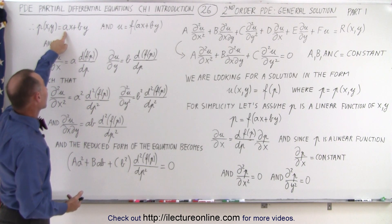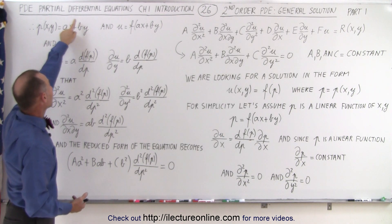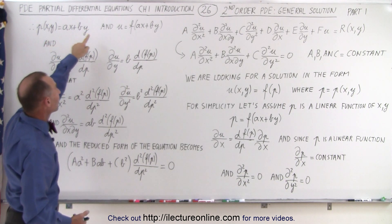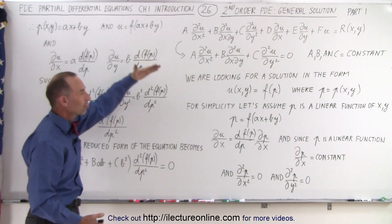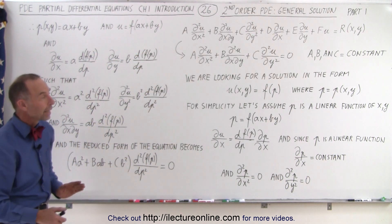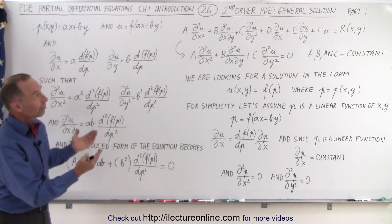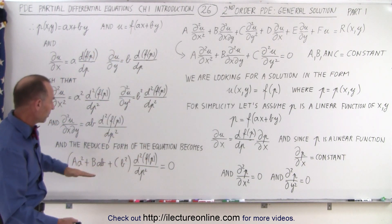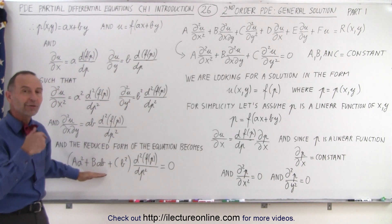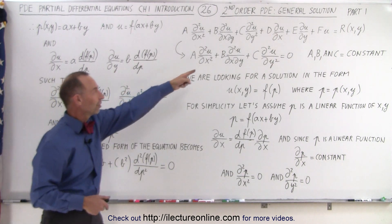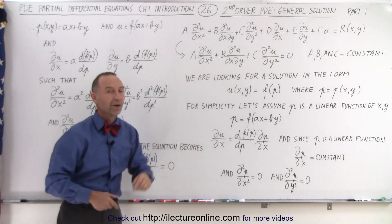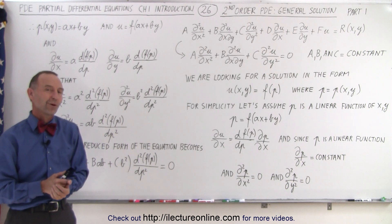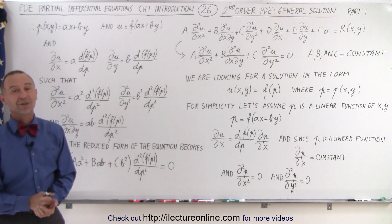In other words, we're going to find the values for a and b, and that will then give us a solution for p, which then gives us a solution for u. That's the general approach that we're taking. And since I'm running out of board space, there will be a part two where we'll finish this job and actually give you a general form of the solution of this second-order partial differential equation. And that's how it's done.